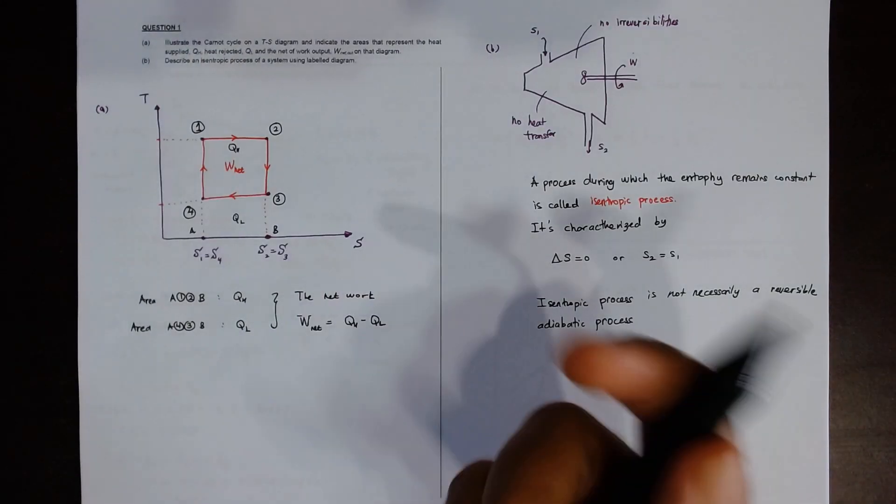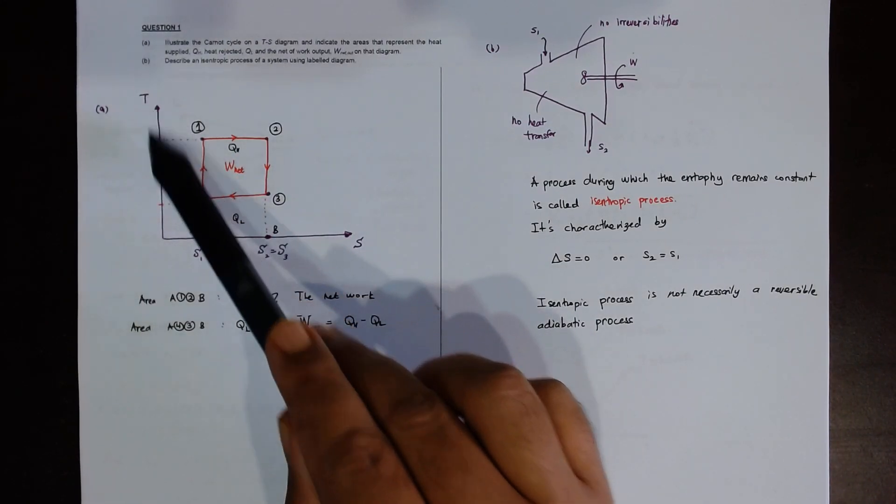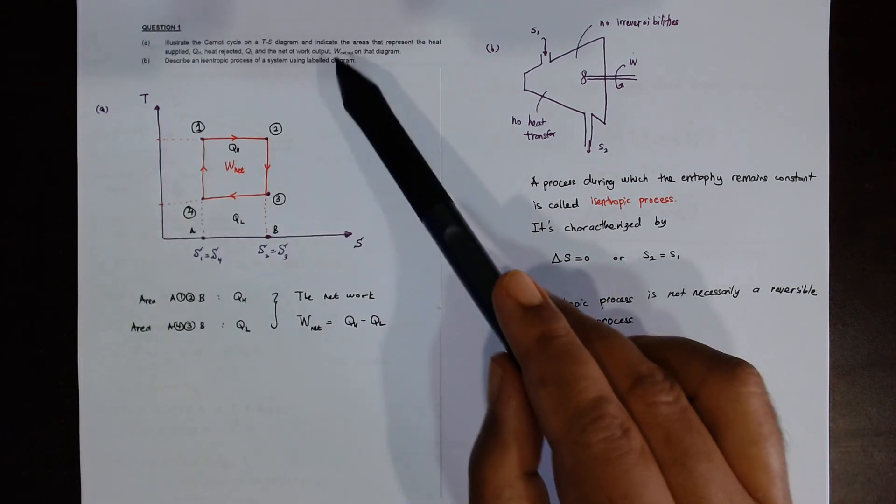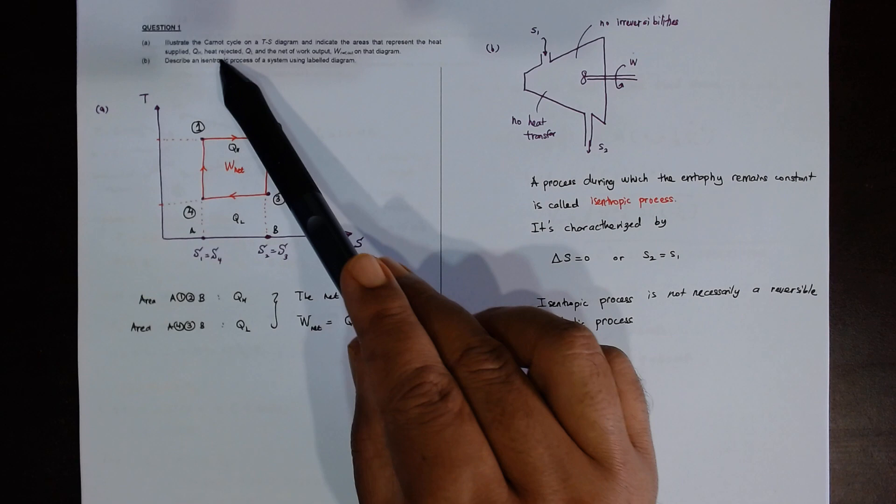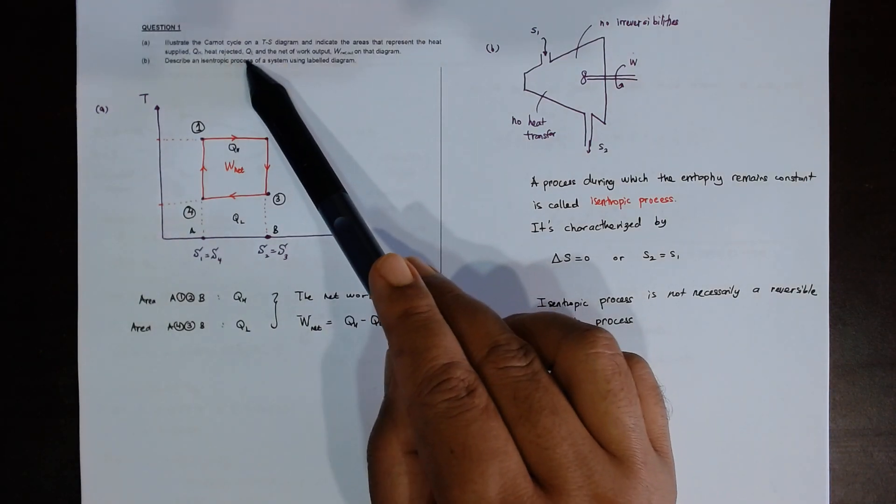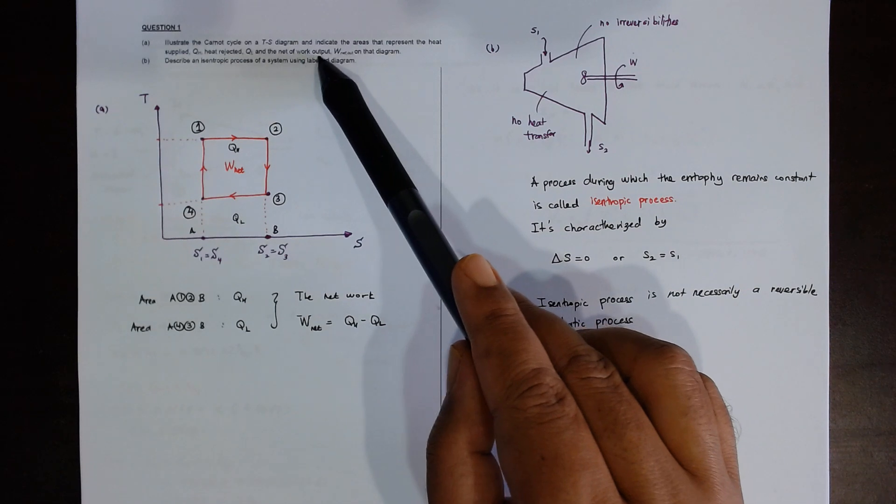They ask you what? Illustrate the Carnot cycle on a TS diagram, so this is a TS diagram. Draw it nicely and indicate the area that represents the heat supply QH dot, heat rejected QL dot, and the net work output W net out on that diagram.